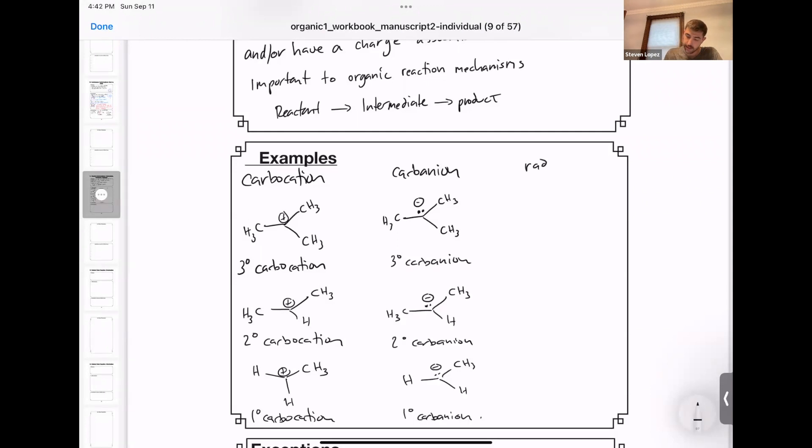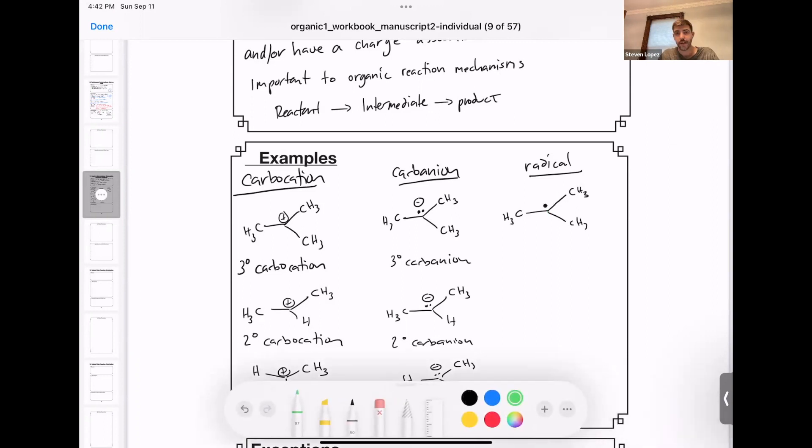And radicals, the last category and the last class of reactive intermediates that we'll talk about today. So this is the structure here. Now you can see that this carbon, which I'll highlight in green, this carbon which I'll indicate with a green C, has a single electron on it.